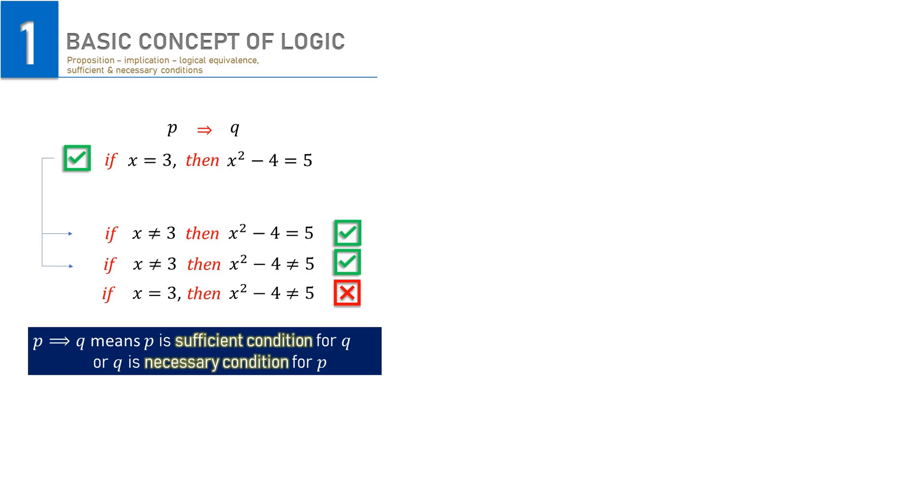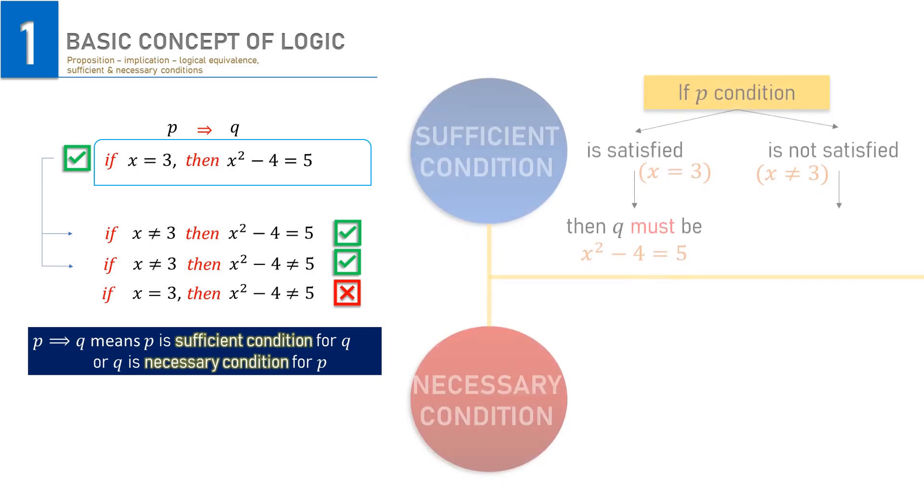Similar to the previous example, we now have the implications in mathematical context. P is x equals 3 and Q is x squared minus 4 equals 5. The first indication for correct implication is, if P is true, then Q is true. Clearly here, if x equals 3, then x squared minus 4 must be 5.